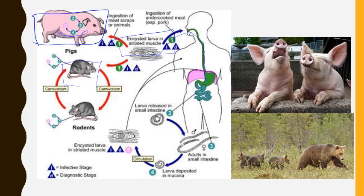Once ingested, the larvae leave the meat when it reaches your small intestine. It takes about two days for the larvae to become adult worms. Once adult, the female worm can produce up to 1,500 larvae over one to three months. These larvae then migrate to various body sites — they have preferences for the extraocular area, tongue, deltoids, pectorals, diaphragm, and intercostal muscles. They can also migrate to the heart, which is certainly a muscle and represents a serious complication.